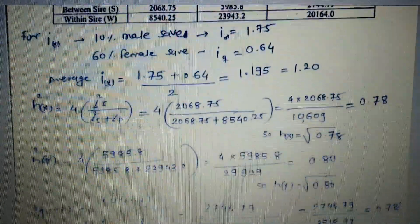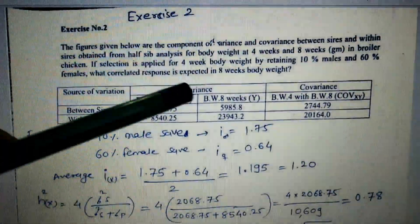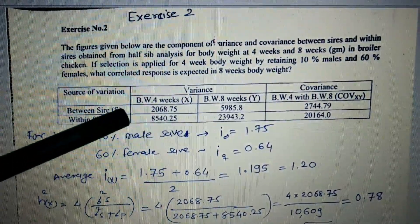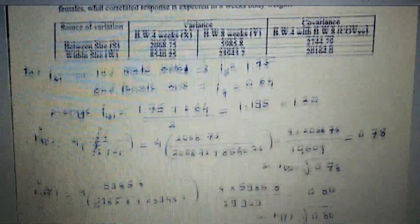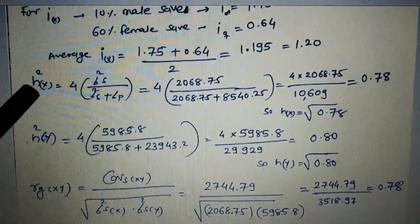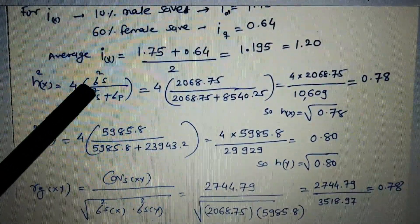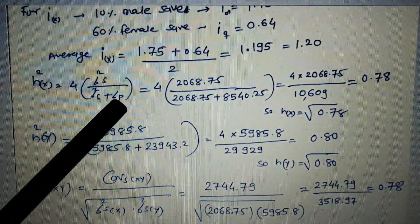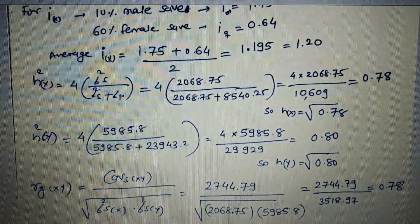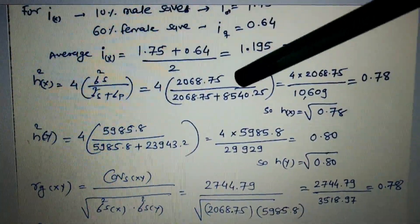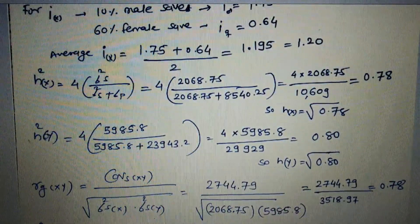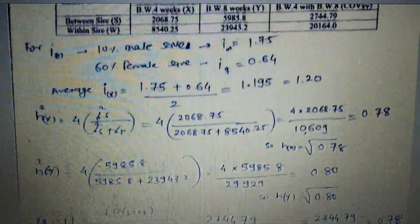For heritability estimation using half-sib analysis, the formula is: h² = 4 × Variance_S divided by (Variance_S + Variance_W). For the X trait (four-week body weight): numerator is 4 × 2068.75, denominator is 2068.75 plus 854025.